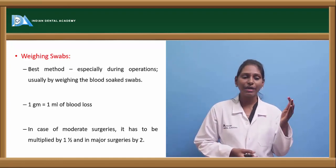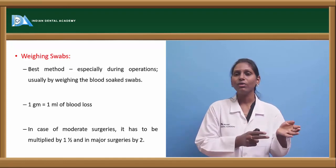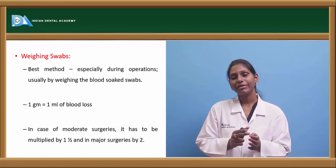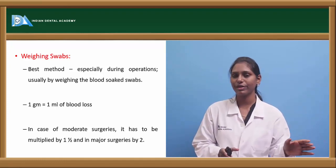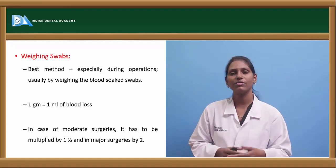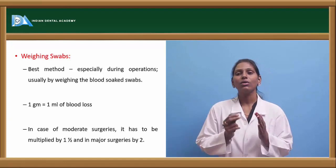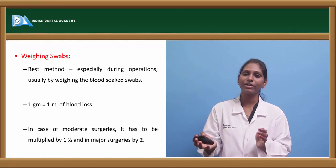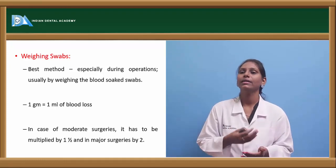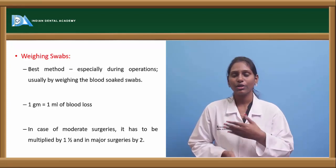To weigh swabs: first, weigh the fresh unused swabs and note the weight. After use, collect all blood-soaked swabs and weigh them again. The difference gives the amount of blood loss, though this is always less than actual loss due to evaporation. One gram of swab weight equals one ml of blood loss. For moderate surgeries, multiply by 1.5; for major surgeries, multiply by 2.